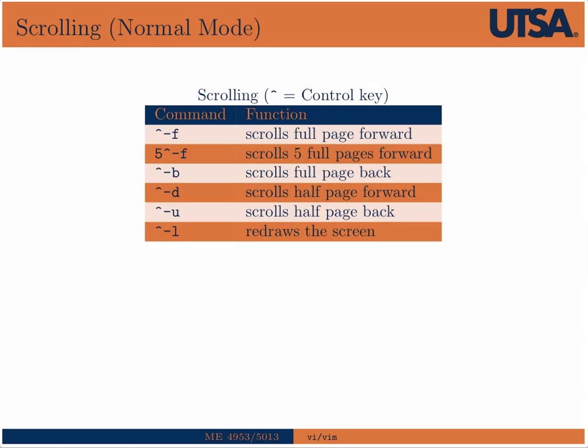Let's talk about scrolling. The small file I had open wasn't large enough to need scrolling, but if you hit Control F, you'll go forward a full page — 5 Control F goes forward five full pages. Control B goes back a full page. Control D goes down a half page. Control U goes up a half page. Control L redraws the screen — occasionally the buffer can get garbled, and if that happens, just hit Control L for a clean screen.